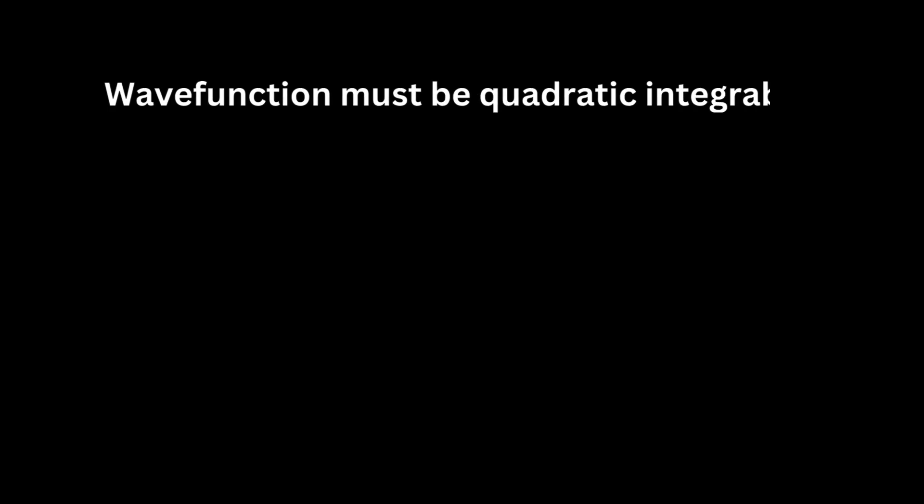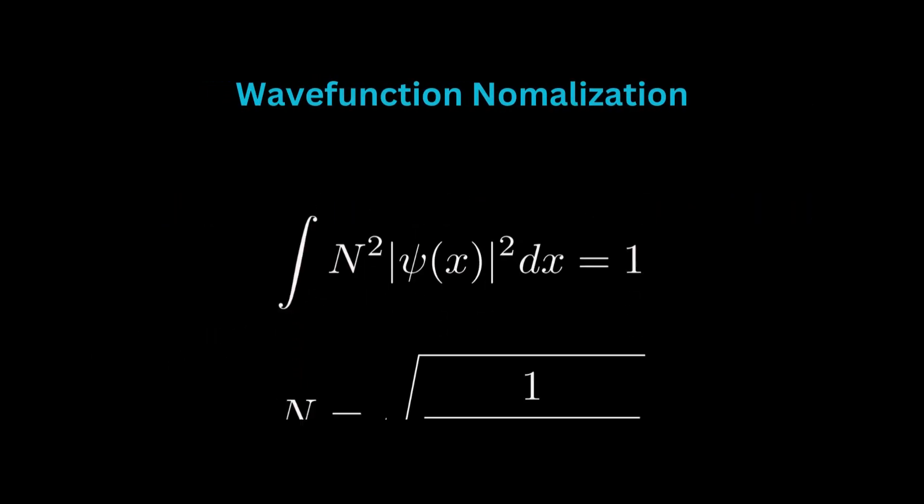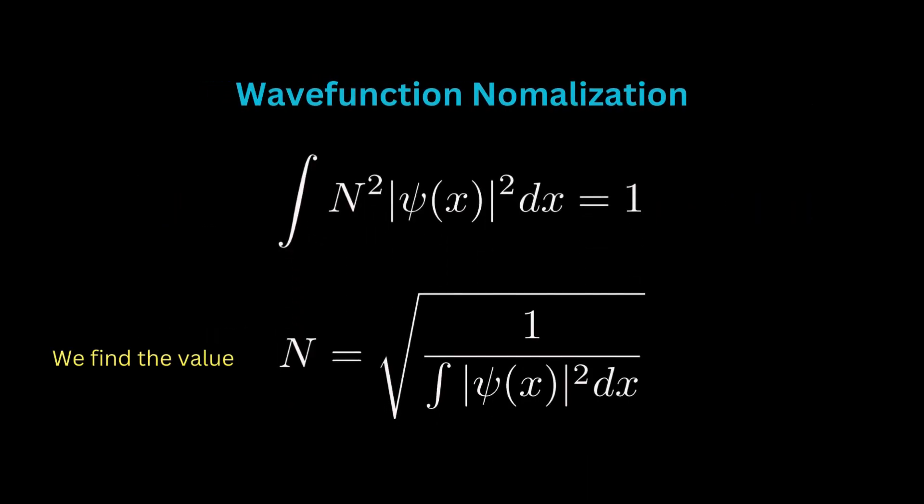A quantum mechanical wave function should be quadratically integrable, meaning this integration should give a finite and real value, where psi star is its complex conjugate. This inside the integral is another function, it's a real function, and it's called the probability density of particles' residence positions. If we plot it on the x-axis, it will tell us at which positions the particle is more or less likely to be found. We normalize the wave function so that the integration of this probability density over the entire allowed space yields one.